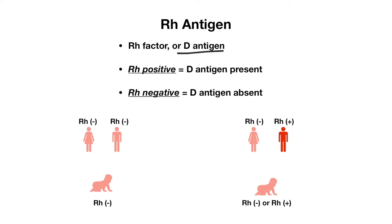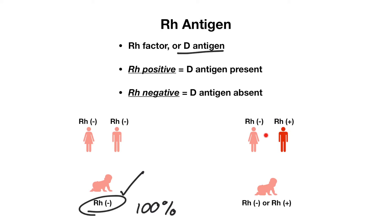Let's talk about how the RH antigen is inherited. If both mom and dad are RH negative, then the child is always going to be RH negative, 100% of the time. But if mom is RH negative and dad is RH positive, then the child could be either RH negative or RH positive.